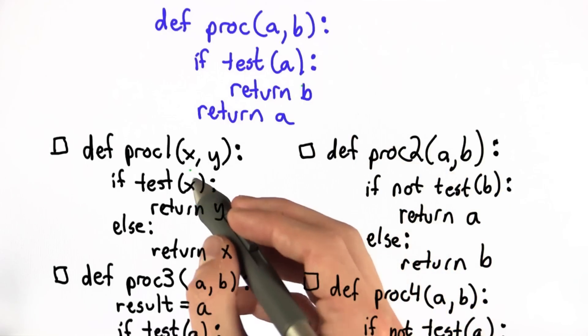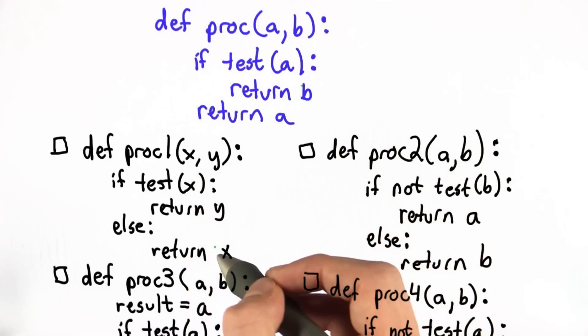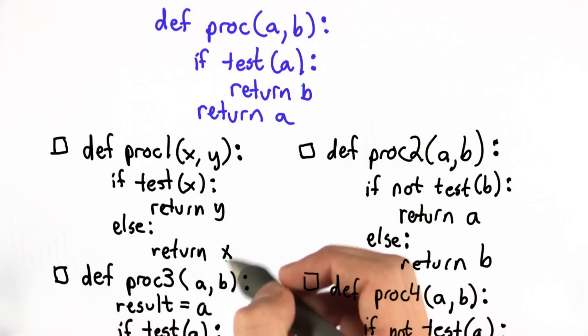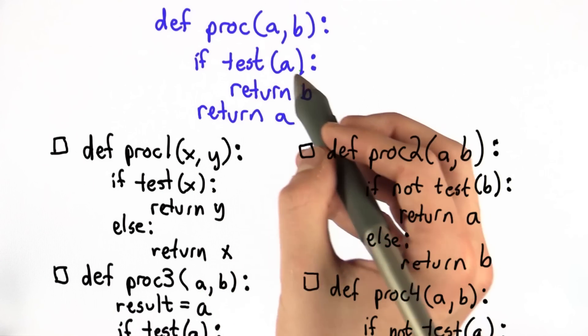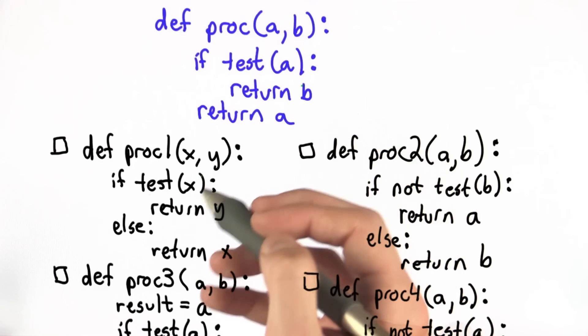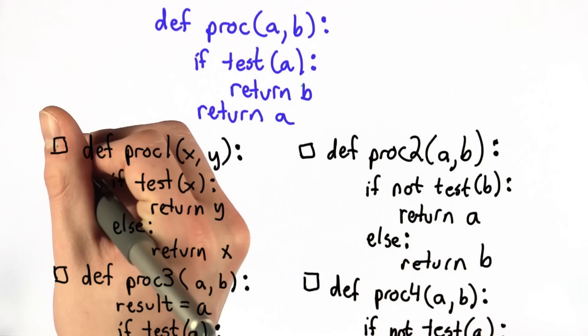If test of the first parameter is false, we return that parameter x. So test x is false, which is equivalent to test a is false, and in both cases we return a and x, which are just different names for the same variable in this function. So this is equivalent.